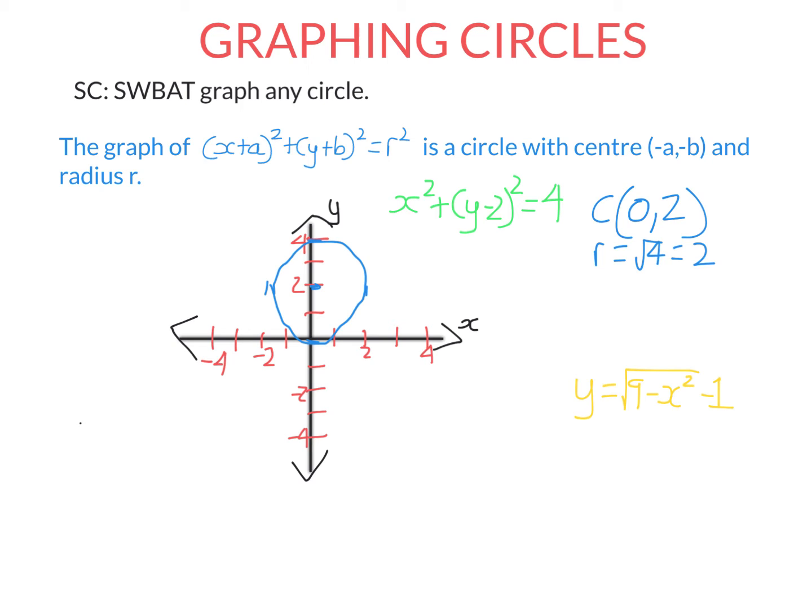So the domain of this circle, the values x can take, are between -2 and 2. And the range, so again, we're using these squiggly brackets because domain and range are sets, so it'll be y such that y can take any value between and including 0 and 4.